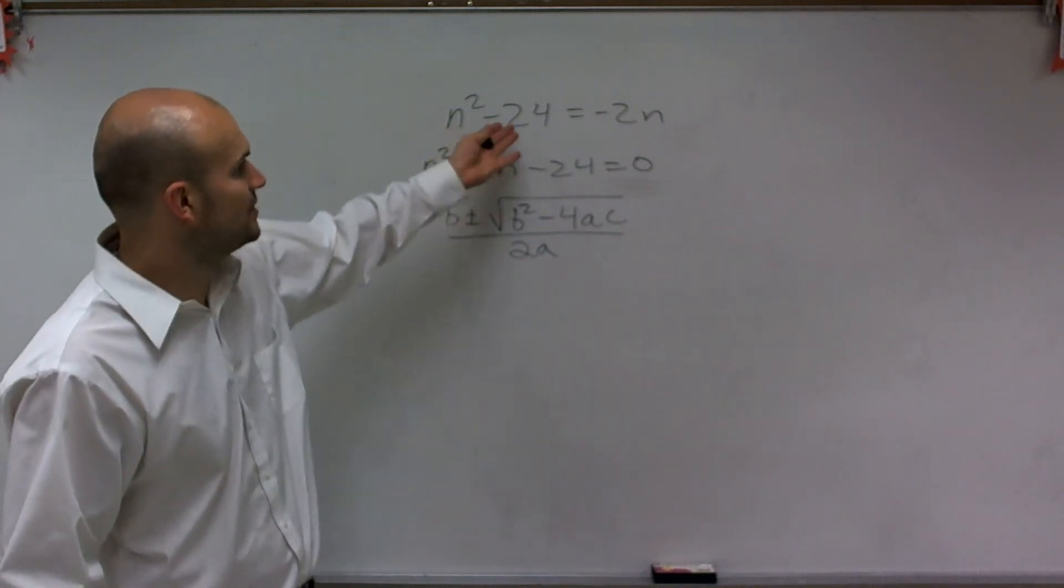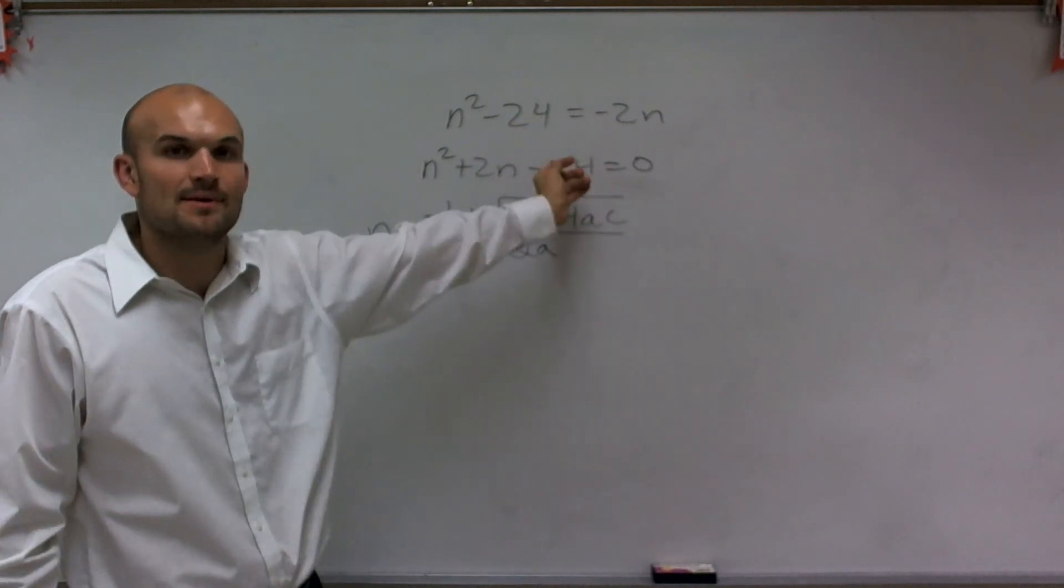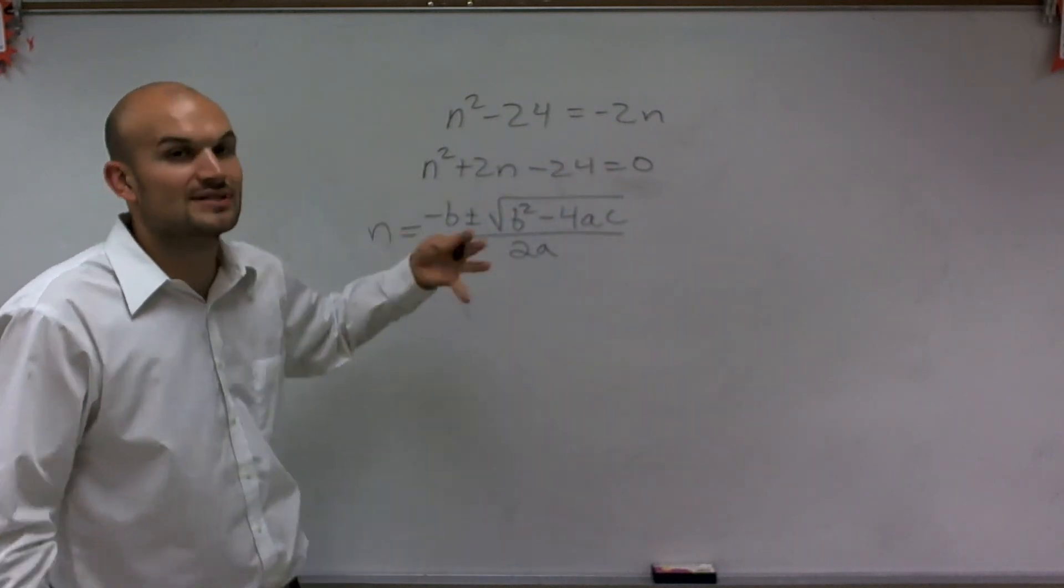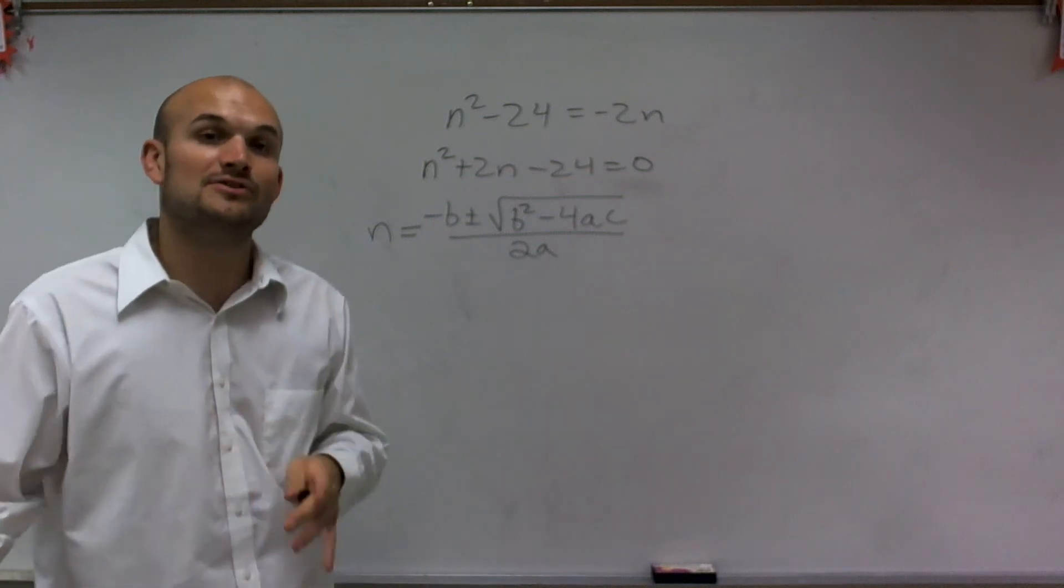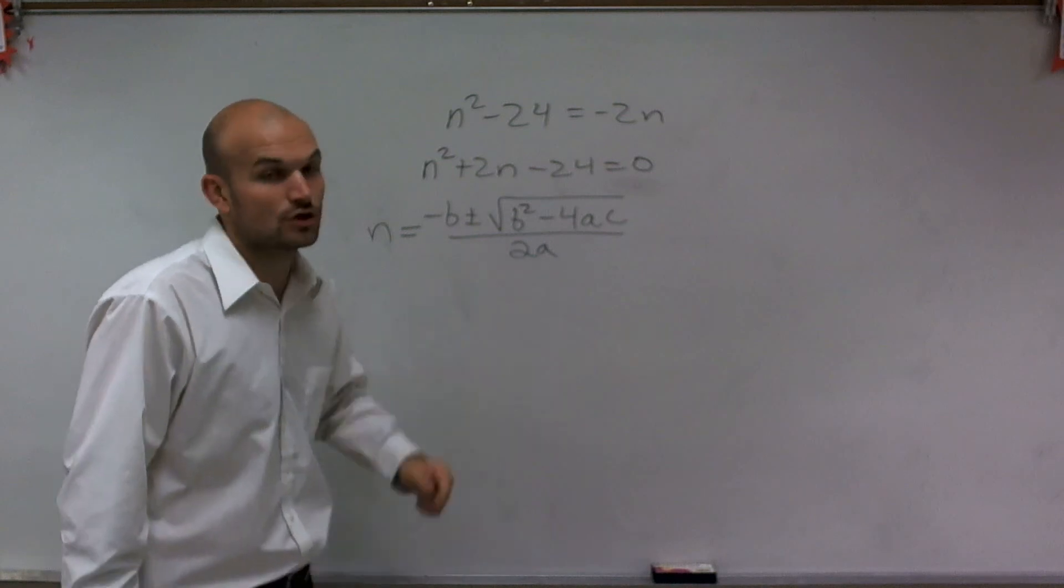That's why we want to do it, because I have an n on both sides. You can't just solve for it by getting n by itself. We could sometimes use factoring, but sometimes the equations are not factorable. So we have to use the quadratic formula.